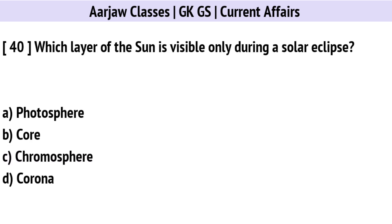Which layer of the Sun is visible only during a solar eclipse? Correct option is D: The Corona.